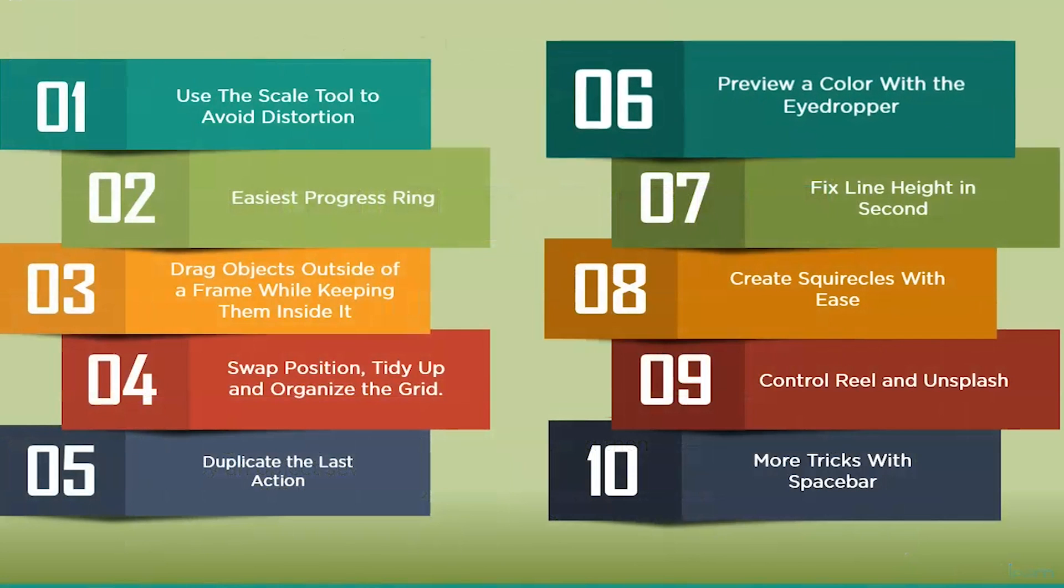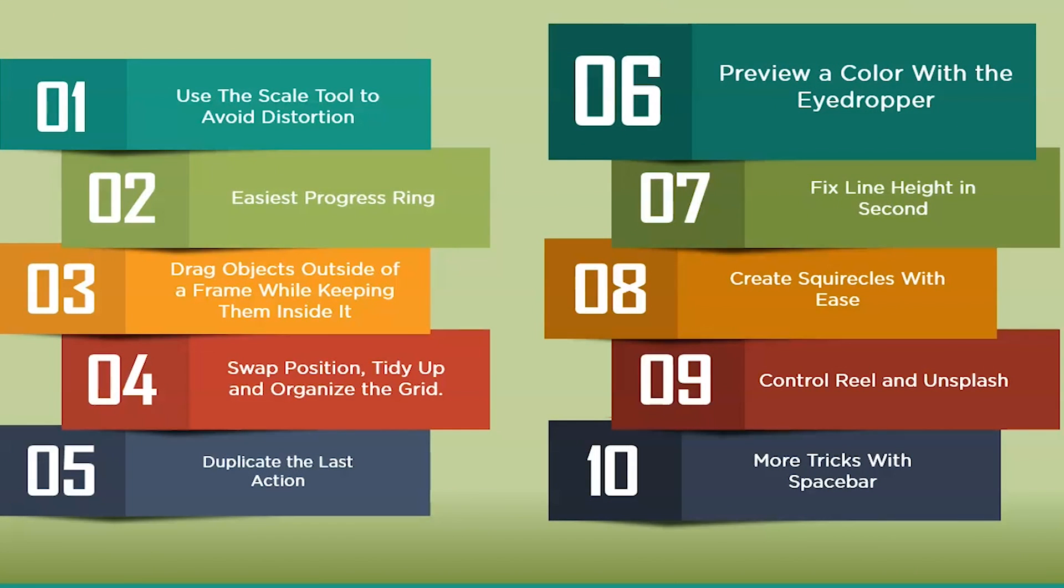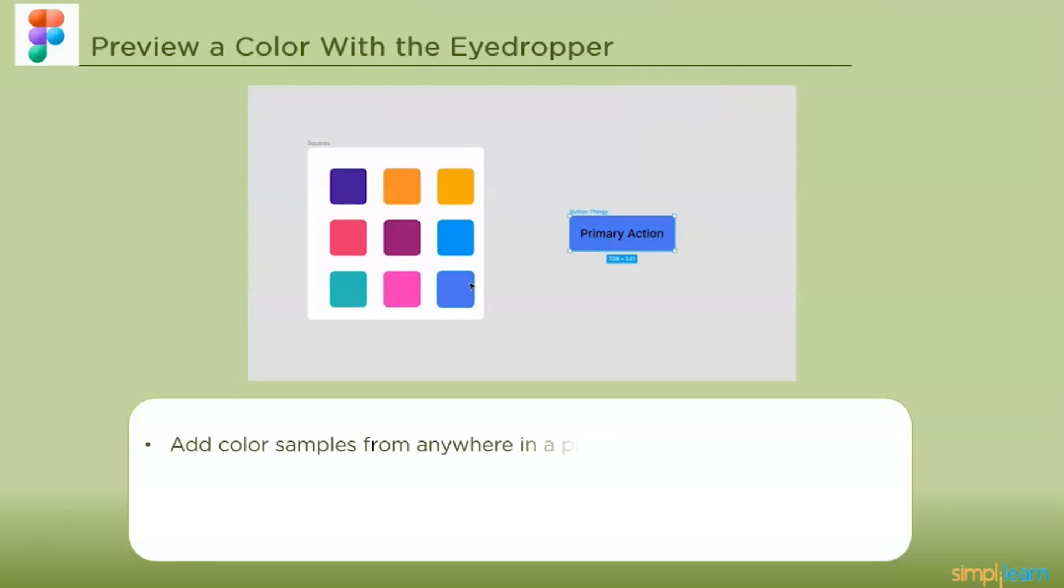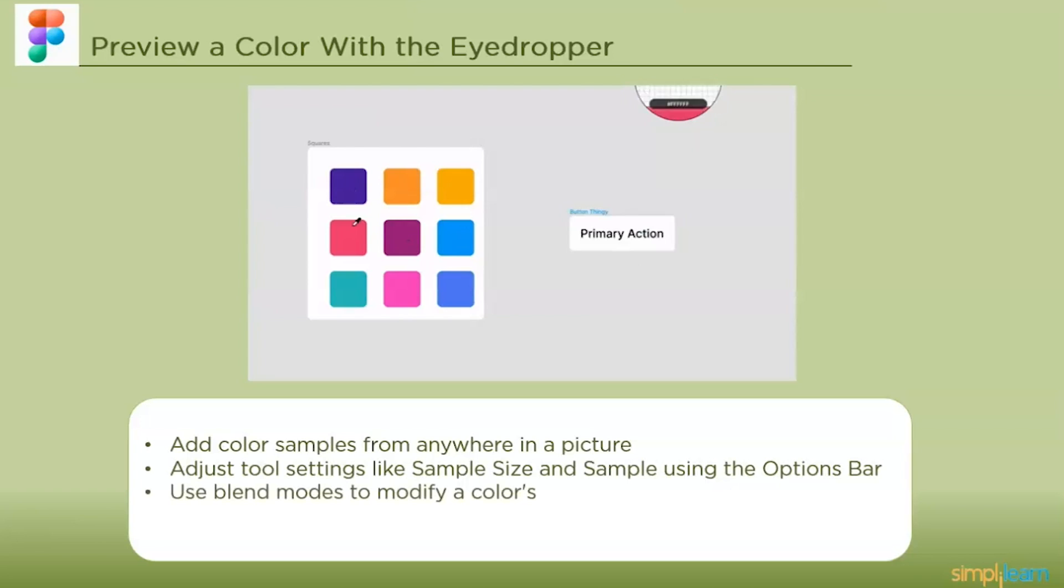The next one is preview a color with the eyedropper. You may paint over text, layers, strokes and other vector objects with the color picker. The eyedropper tool allows you to add color samples from anywhere in a picture to your element panels. To acquire the desired effect adjust the tool settings like sample size and sample using the option bar. Select the color you wish to view by clicking. Apply solid fills, gradients or pictures using the color picker. In addition you may use the blend modes to modify a color's saturation or opacity.